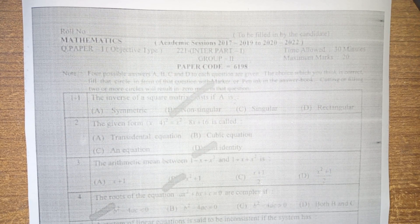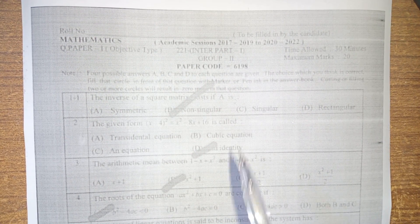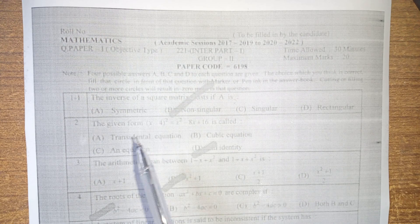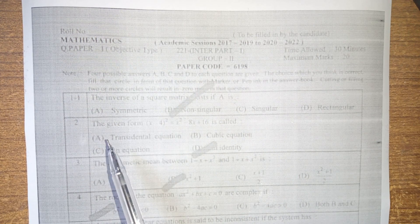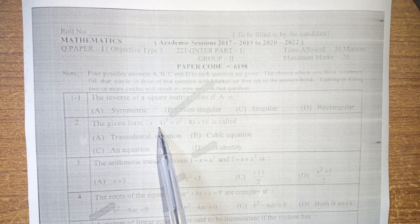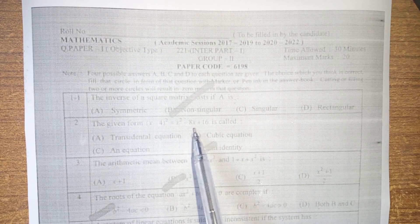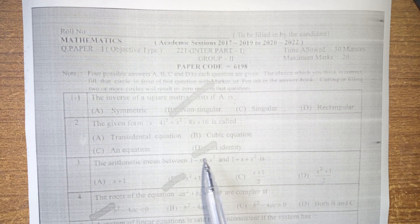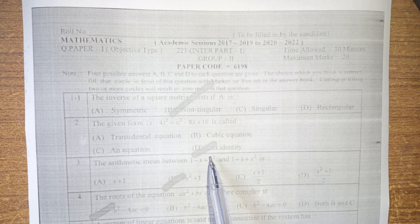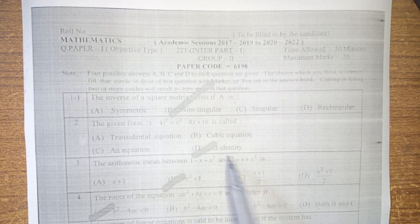First, the inverse of a square matrix exists if A is non-singular. The given form of x minus 4 whole squared is equal to x squared minus 8x plus 16 is called basically identity.